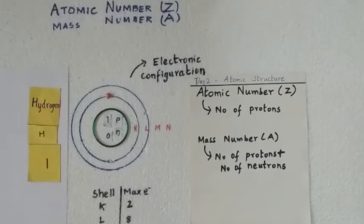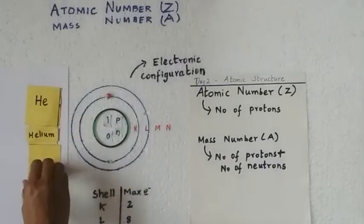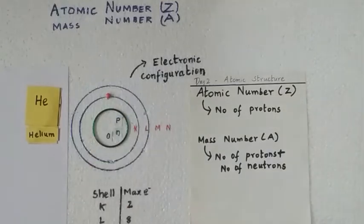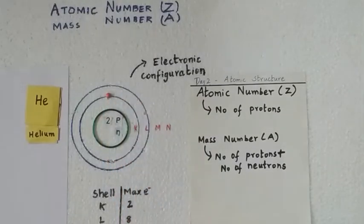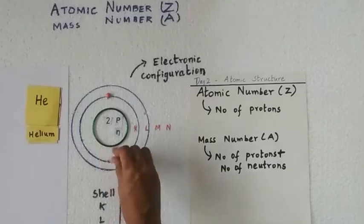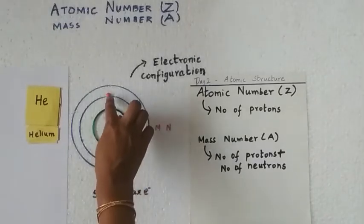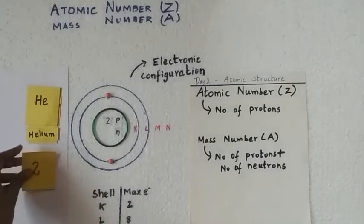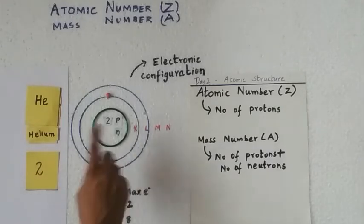Now let us consider the next example: helium, given by the symbol He. Helium has 2 protons. Since the number of protons is always equal to the number of electrons, helium also has 2 electrons. So the atomic number of helium is 2.